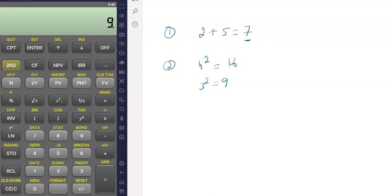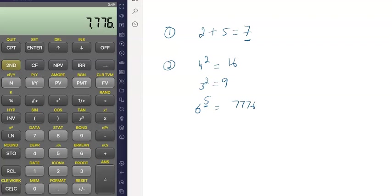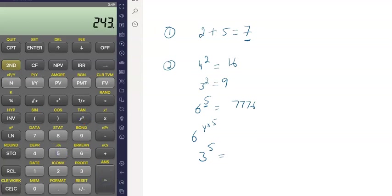If you want to take a larger power, like six raised to power five, use the yx button — y raised to power x. Press six, then yx, then five. That gives 7,776. Similarly, three raised to power five: press three, yx, five — that equals 243.